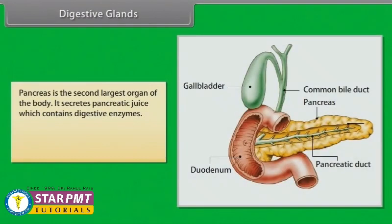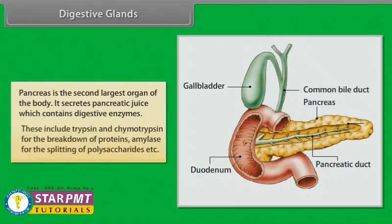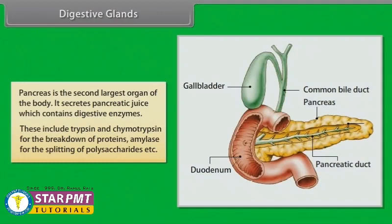The pancreas is the second largest organ of the body. It secretes pancreatic juice containing digestive enzymes, including trypsin and chymotrypsin for the breakdown of proteins, and amylase for the splitting of polysaccharides.